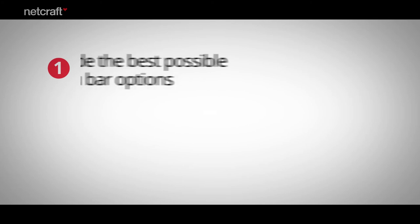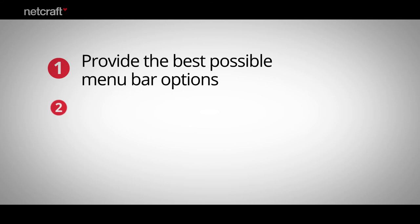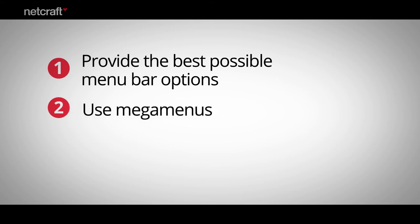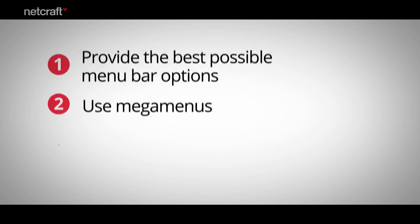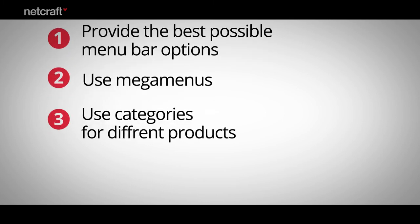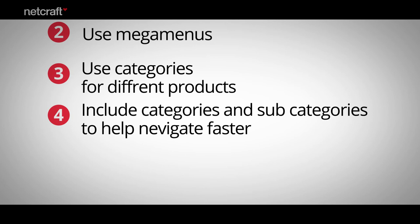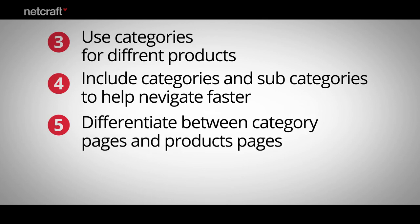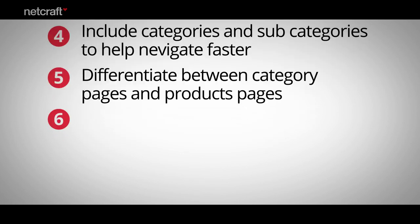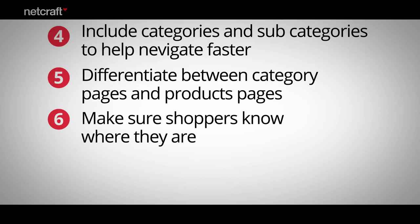When a category has a manageable number of products, it doesn't need to be further divided into subcategories. So, what have we learned about categories? 1. You can help shoppers by providing the best possible menu bar options. 2. Consider using mega menus — they reduce the number of clicks shoppers need to get to products. 3. You don't need categories if you're selling just a few similar products. 4. Do include categories and subcategories if they'll help shoppers navigate to products faster. 5. Be sure that category pages don't look like product pages. 6. Don't assume shoppers know where they are — they could land on any page on your website.